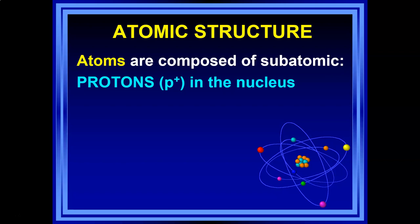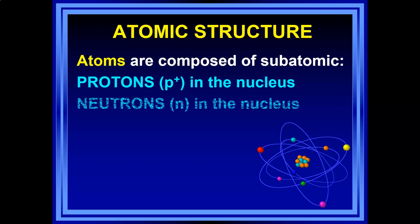We start with protons. Your textbook uses a P with a plus to indicate a positive electrical charge. Protons are found in the nucleus of an atom — the nucleus is the center, the core, the very middle physically. Along with the protons, we also have neutrons in the nucleus. Neutrons are neutral — their very name means they do not have any electrical charge.